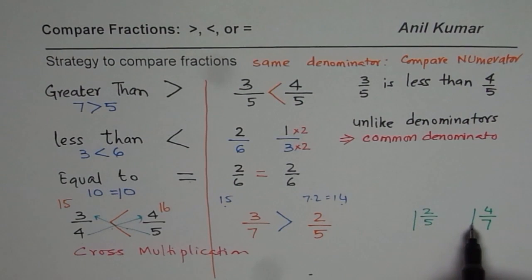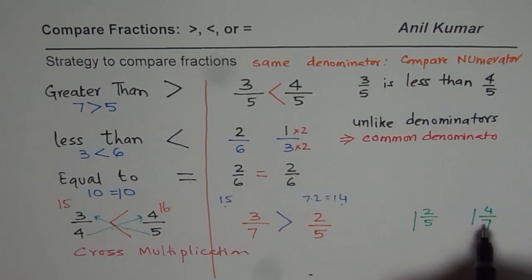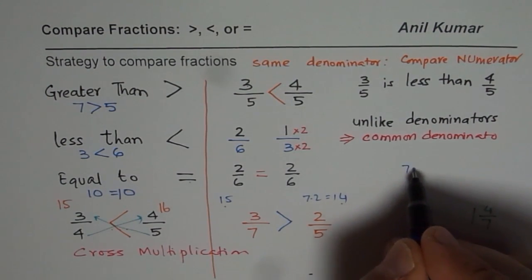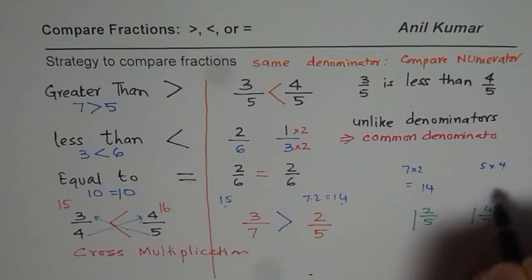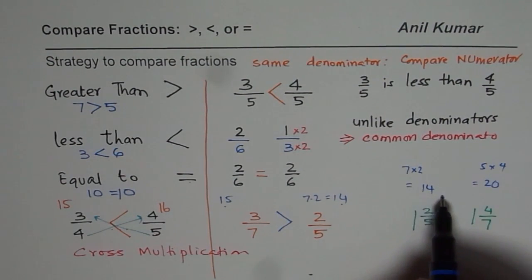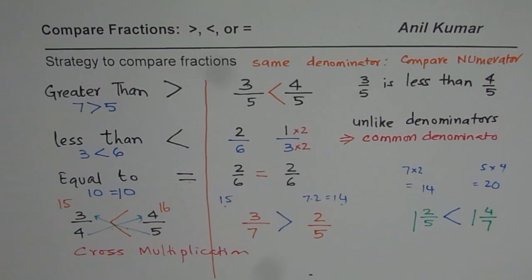When you have mixed fractions, compare the whole numbers first. If the whole numbers are the same, compare the fractions. To compare fractions with unlike denominators, cross multiply. 7 times 2 equals 14, and 5 times 4 equals 20. Since 14 is less than 20, that less-than symbol goes here. That is how you should be comparing fractions — remember this cross multiplication strategy.